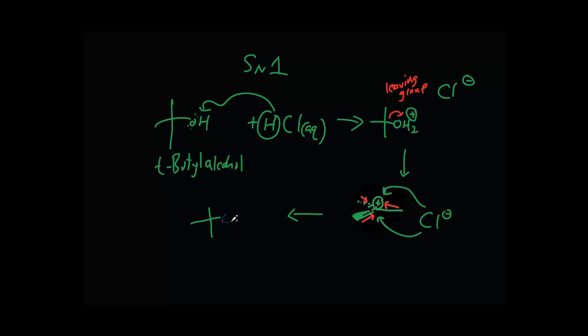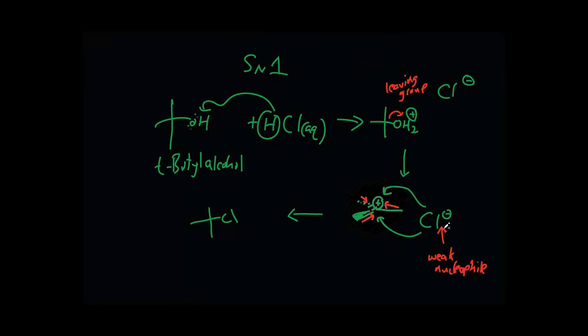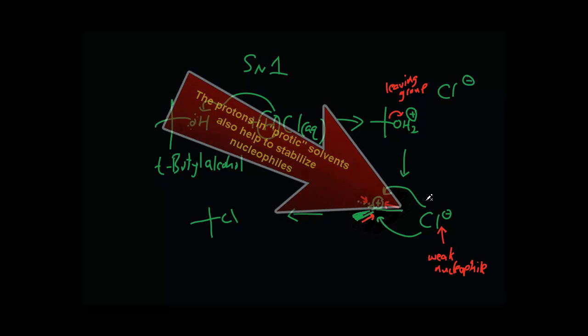But in this case it doesn't really matter—you're just going to get the formation of tert-butyl chloride. Why did the chlorine attack? Well, chlorine is a nucleophile. Anytime you see a negative charge, chances are it's a nucleophile. Chlorine is a weak nucleophile, and the reason why it's weak is because it does want to get rid of this negative charge, but chlorine is pretty electronegative, so it does love electrons, so this negative charge is kind of comfy.